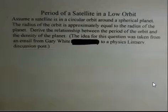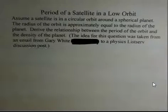We're going to assume the object goes around in a circle so it doesn't hit any mountaintops. A smooth circle. We're going to say the orbit's circular and derive a relationship between the period of the orbit and the density of the planet. This idea came from an email that Gary White had posted on a physics listserv several years ago. It's good physics, so let's give it a whirl here.